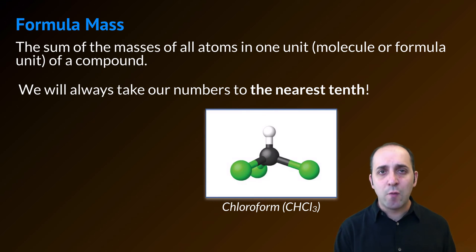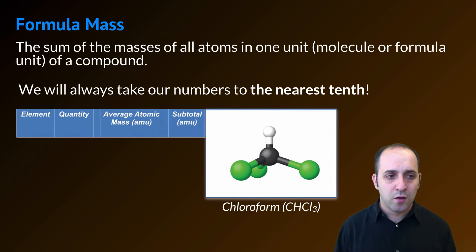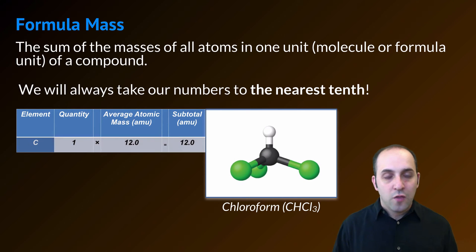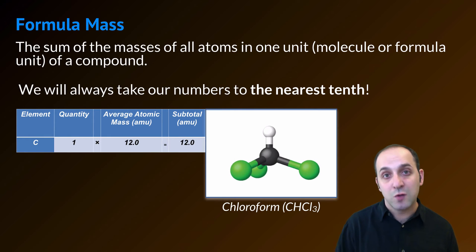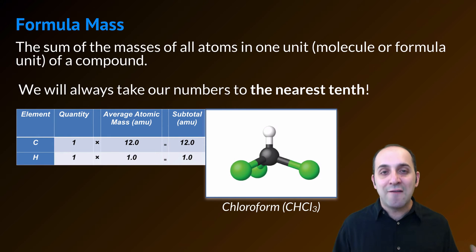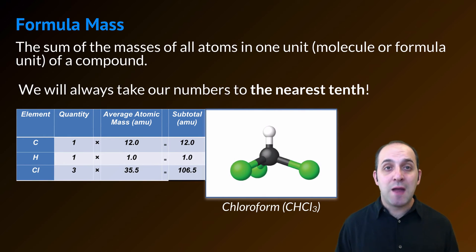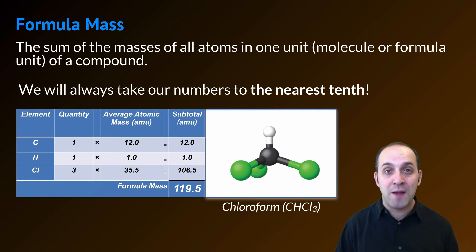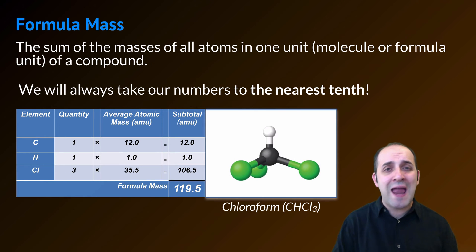Pause the video and try that on your own, and then we'll go through it together. I'm going to make a chart to keep track, with columns for element, number of atoms, average atomic mass, and subtotal. There's one carbon with an average atomic mass of 12.0 AMUs, giving a subtotal of 12.0. There's one hydrogen with an atomic mass of 1.0, subtotal 1.0. And there are three chlorines — chlorine's average atomic mass is 35.5 AMUs, giving a subtotal of 106.5. Adding these all up gives the formula mass of chloroform: 119.5 atomic mass units.